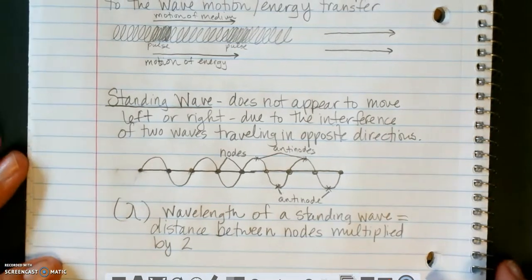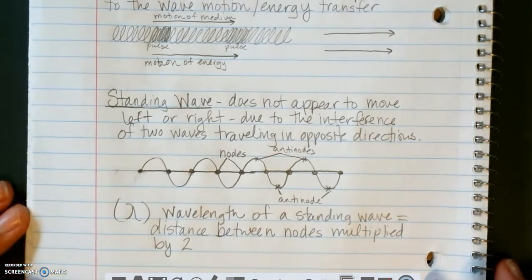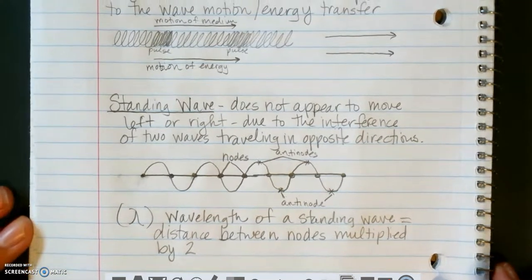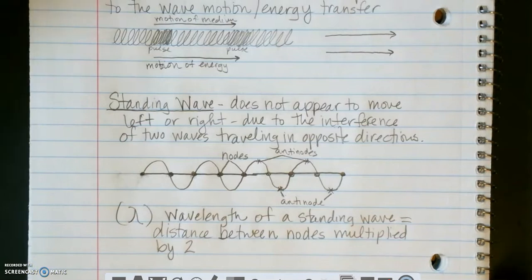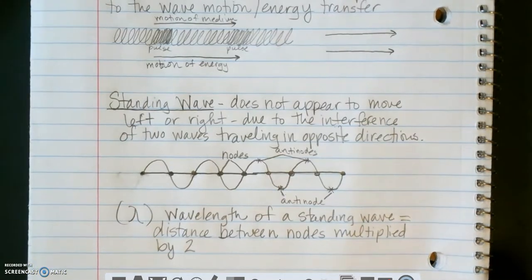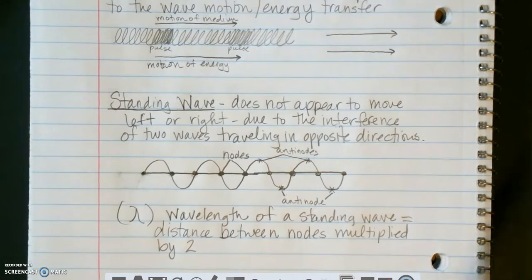Alright, so those are the types of waves. So we have three types, transverse, longitudinal, and standing wave. Alright, so now we're going to talk about the properties of waves. I'm going to end this video, because I only have 15 minutes at a time, and I'm going to start a new one. And you will need to watch that one separately to get the properties of waves.